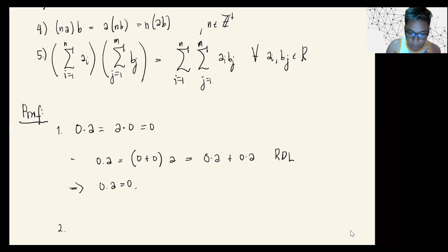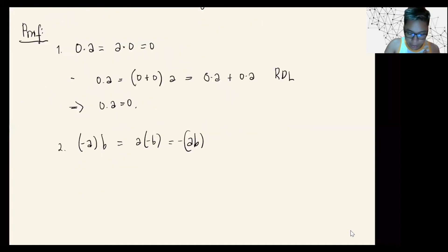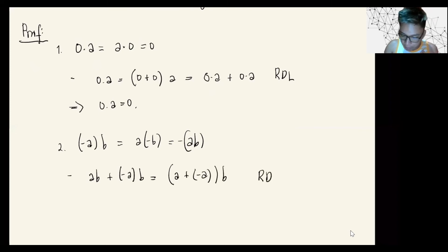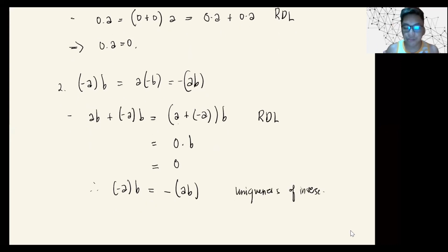For property two, we want to show (−A)·B equals A·(−B) equals −(A·B). Observe that A·B plus (−A)·B can be written as (A + (−A))·B by the right distributive law, which equals 0·B. By property one, this equals 0. Therefore (−A)·B equals −(A·B) by uniqueness of the additive inverse. Similar reasoning with A·B plus A·(−B) gives A·(−B) equals −(A·B) as well.